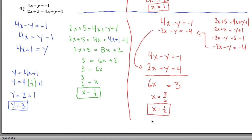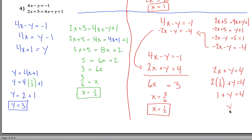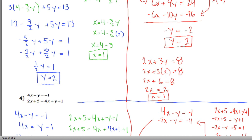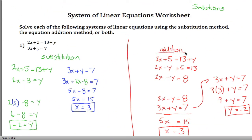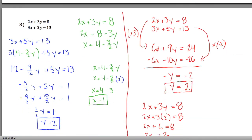We got x equals 1 half. Now take any equation above and solve for y. Here's one where I have a positive 1y by itself: 2x plus y equals 4. Change the x into 1 half: 2 times 1 half is just 1, so 1 plus y equals 4. Subtract 1 from both sides and 4 minus 1 is 3, so y equals 3 — same answer as before. So there are four problems, each solved two different ways. In red we used the addition method, also known as the elimination method, and in green and blue we used the substitution method. I hope that helps people out.